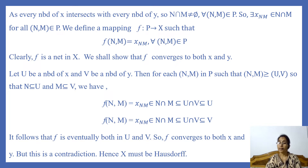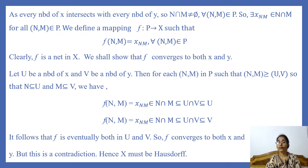But this is a contradiction, because we assumed that every net in X converges to at most one point. So we arrive at a contradiction, and our assumption that the space is not Hausdorff is wrong. Hence X,T must be Hausdorff.